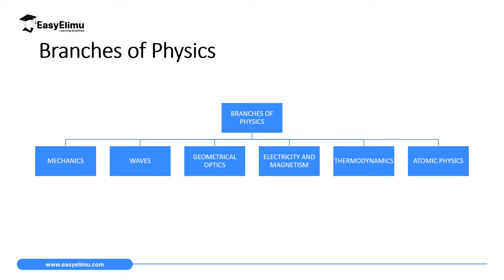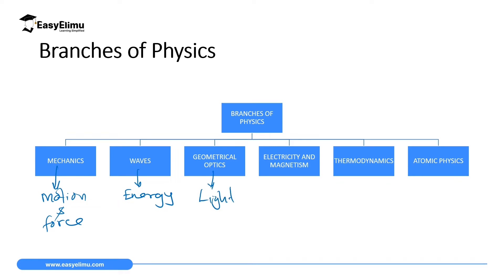Physics can be categorized into six main branches. The first branch is mechanics, where we study the motion of bodies under the influence of force. In waves, we are going to study energy and how we can transmit energy from one point to another. In geometrical optics, we are going to study light and how light can travel in various mediums, from solid to liquid to gases.